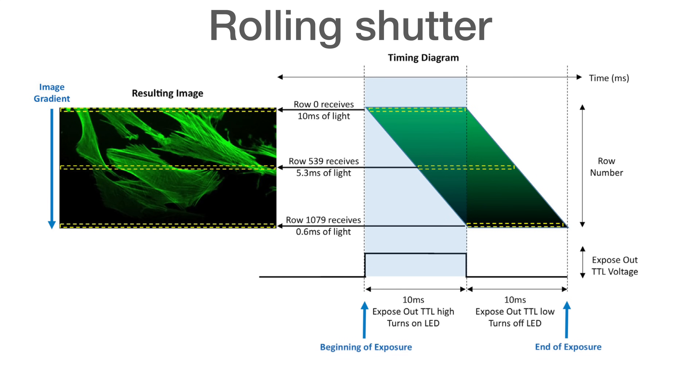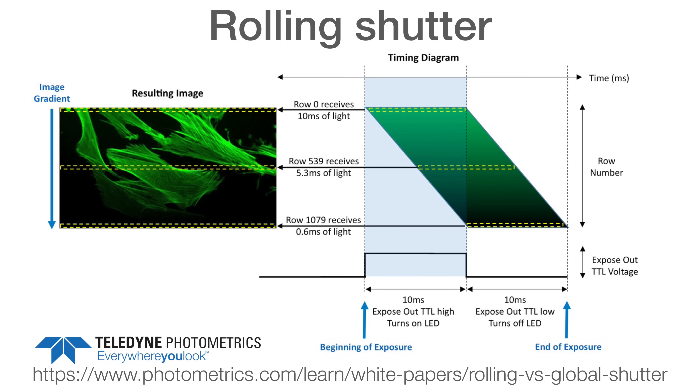Le Mavic 3 n'a pas de shutter mécanique : c'est un shutter électronique qui procède par balayage des différentes lignes du capteur en quelques dizaines de millisecondes, ce qui peut provoquer une déformation (rolling shutter) à haute vitesse. Le Mavic 3 sera donc excellent pour faire de la photogrammétrie avec des photos prises en stationnaire ou à très petite vitesse. En revanche, ce ne sera pas un candidat pour le mapping de grande parcelle où il faut aller assez vite ; pour ces usages, on se tournera vers d'autres produits.